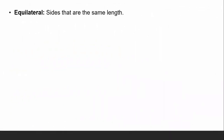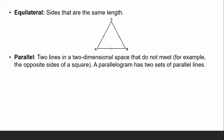Next term: equilateral means that all sides are the same length. The red marks on the triangle indicate that the sides are equal, so this triangle is called an equilateral triangle. There are kinds of triangles: equilateral, isosceles, and right triangle. Next, parallel refers to two lines in two-dimensional space that do not meet — for example, the two opposite sides of a square.